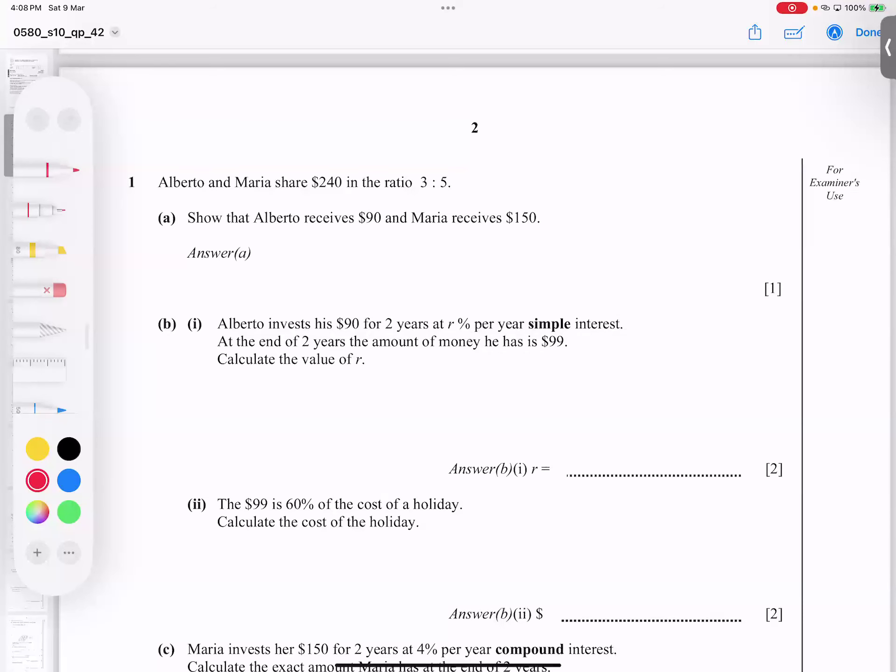Bismillah ar-Rahman ar-Rahim. This is our June 2010 42 variant, question number one. So have a look here. Two names are there, a name and B name.